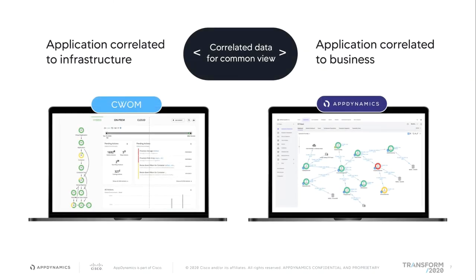When we view our correlated data, we want to provide a common view. On the left side, the application is correlated to infrastructure — the CWOM view — from your virtual application all the way down to your virtual data center. I'm able to get a full view of any pending actions, any warnings before they turn into errors, for both on-premise and cloud environments. On the right side, we're able to see your application correlated to the business view via a flow map, and once you delineate which business transactions are slowed or experiencing errors, you can click into our dashboard and reporting tool to correlate business performance to application performance in real time.